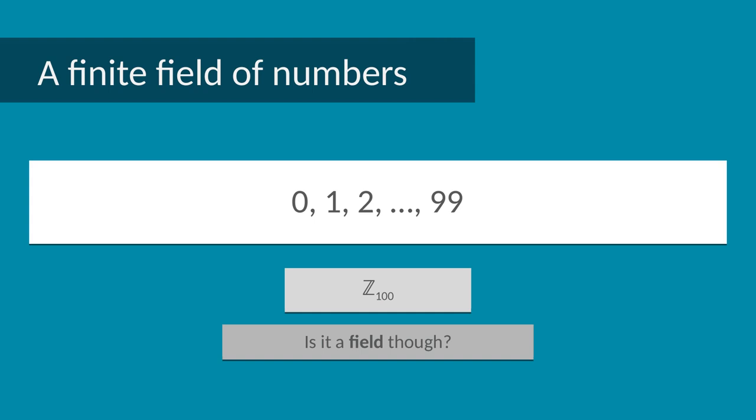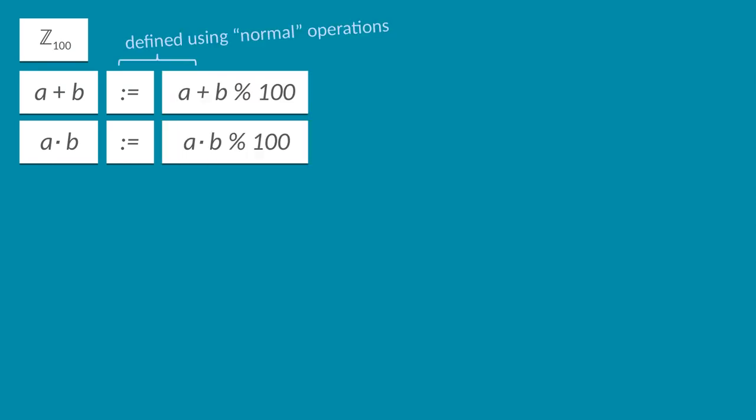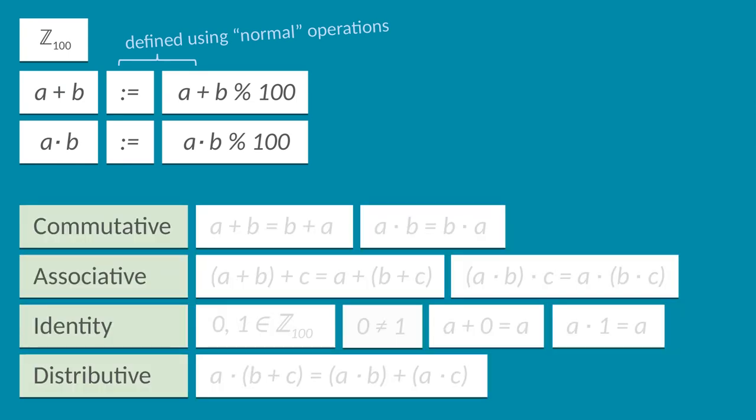Now this is all very cool, but the question remains whether these 100 elements form a field. First, we need to define addition and multiplication so results remain within the set of 100 elements. As we discussed, we can do this by simply taking the normal operations then using the result modulo 100. We then need to check that the field properties still hold. For most of the properties, this seems straightforward. 15 + 60 is the same as 60 + 15, and 20 times 18 is still the same as 18 times 20, so we're still commutative. Associativity, 0 and 1 as identity elements, and distributivity are also easily shown to hold. The only challenging properties are the existence of inverse elements for every element.